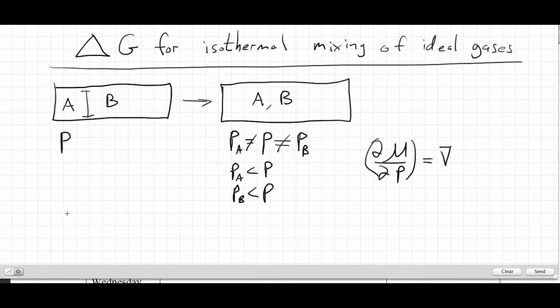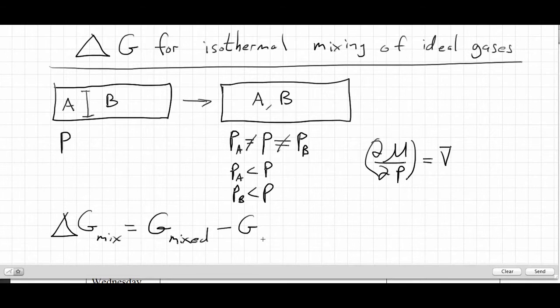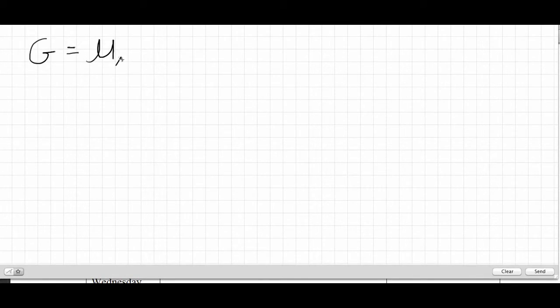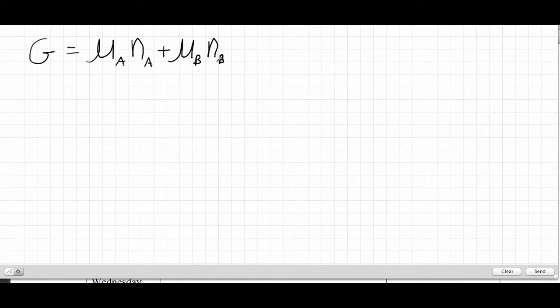So what is delta G of mixing? Delta G of mixing is just G_mixed minus G_pure. The key is to realize that if we sum the chemical potentials of each substance multiplied by the number of moles of each substance, we get the total Gibbs function. In our two-component mixture, chemical potential of B (Gibbs energy per mole of B) times moles of B gives the part of the Gibbs function due to B, and similarly for A.